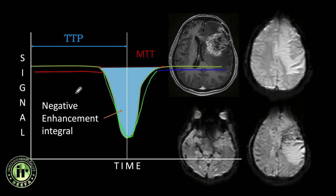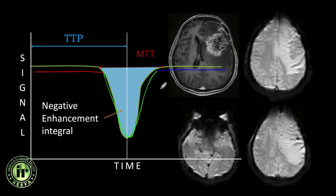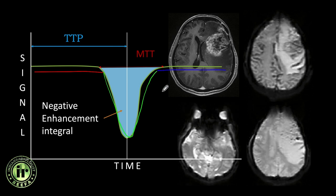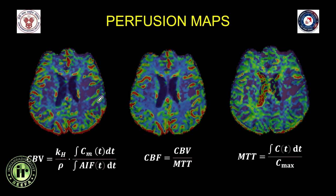Since DSC employs T2 or T2* weighted imaging, there is a drop in signal intensity — in contrast to T1-based techniques like DCE where one sees enhancement or increase in signal intensity. DSC is the most common technique for perfusion imaging of brain tumors. It generates cerebral blood volume, CBF, and MTT maps using complex mathematical formulas. The CBF map can be generated using the central volume principle: CBF = CBV / MTT.